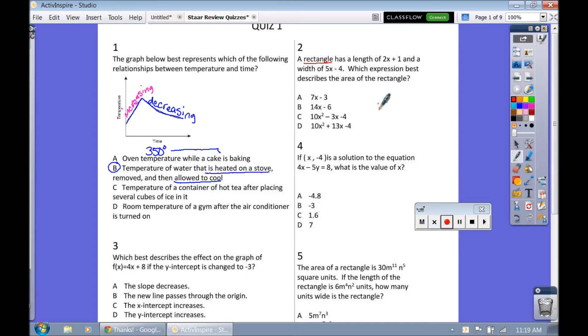Alright, a rectangle has a length. So we're going to draw a rectangle here. It has a length of 2x plus 1 and a width of 5x minus 4. So we're going to label these parts of the rectangle. Which expression best represents or describes the area? So area is length times width.